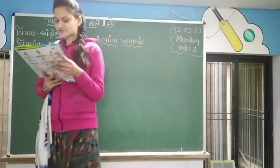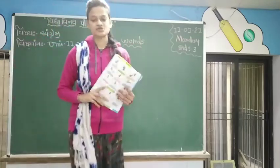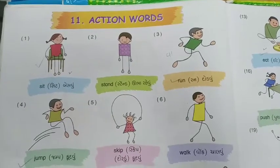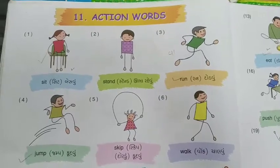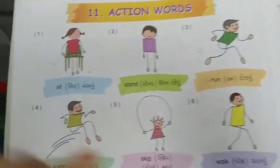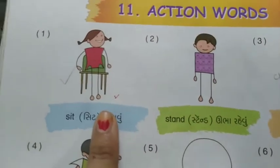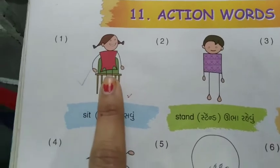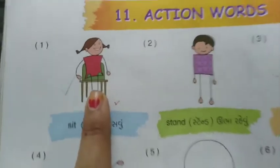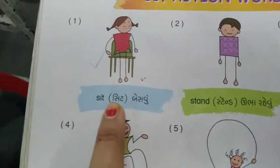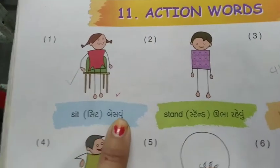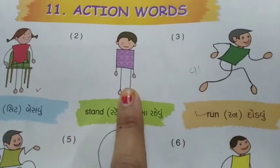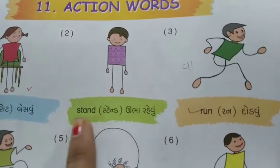And how is it used? હવે બીજા ચિત્રમાં છે એક બોઈ છે, એક્શન કરે છે, ઉભૂરે વાની, તો એને કહેવાઈ S-T-A-N-D.